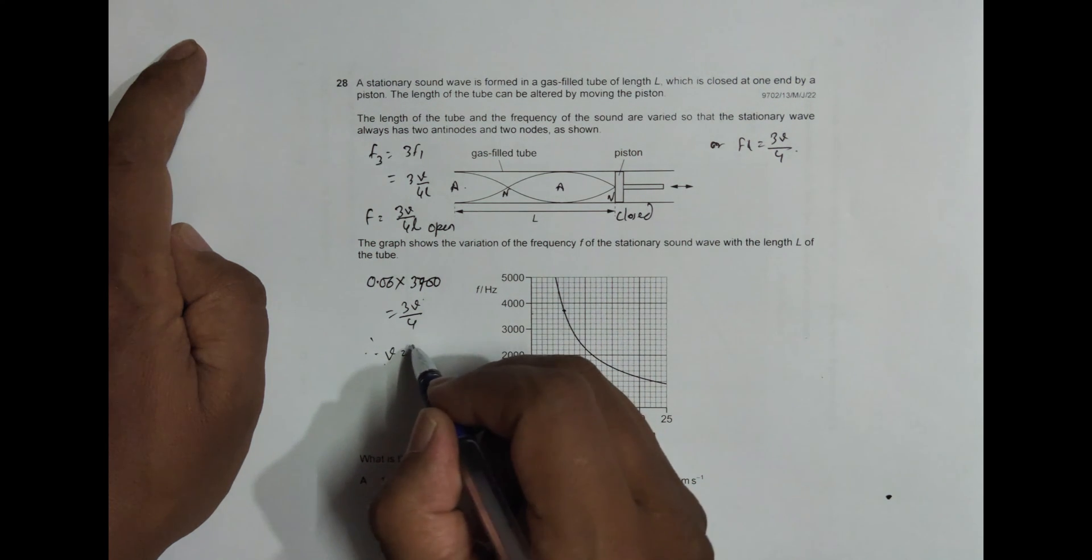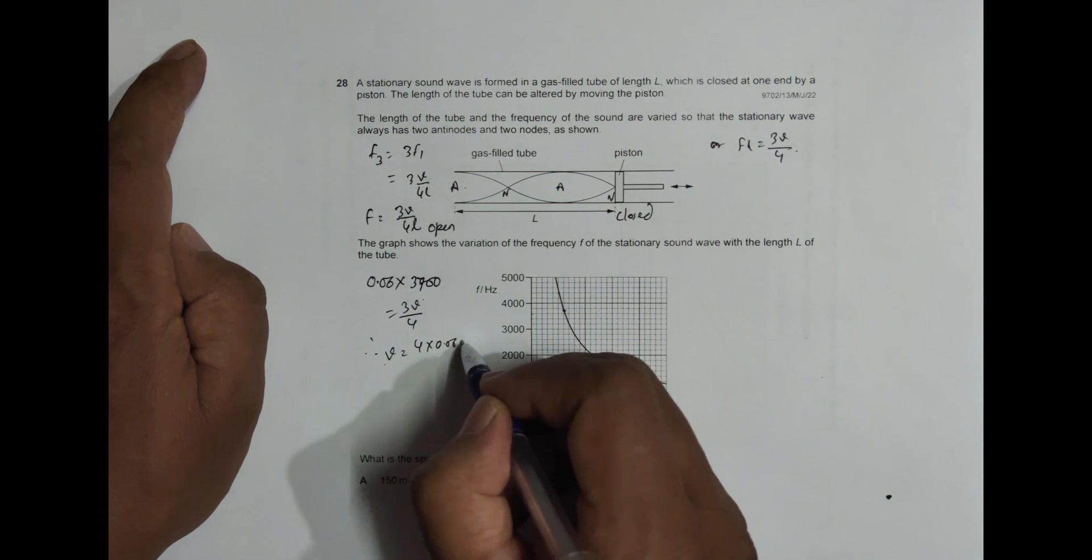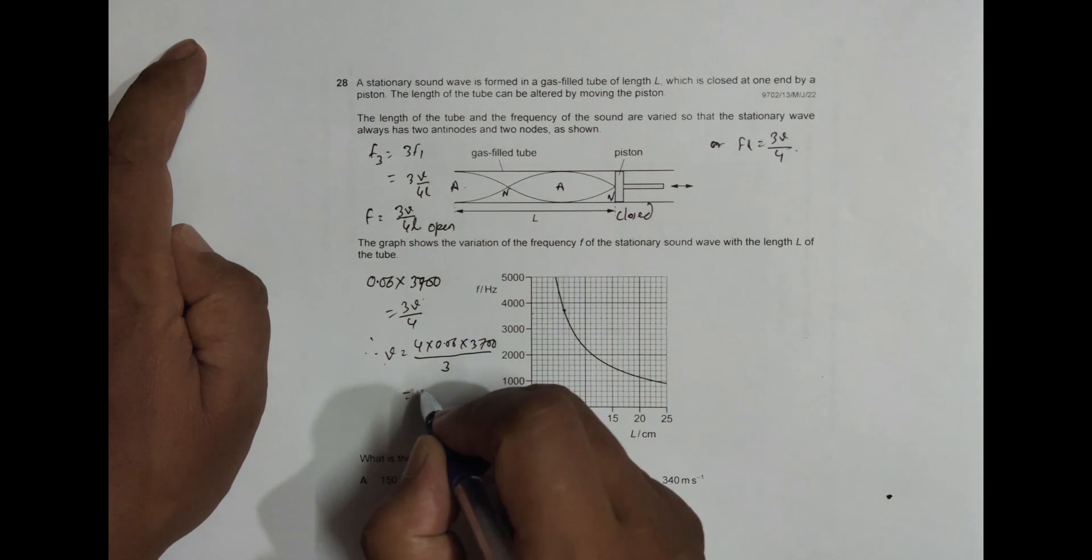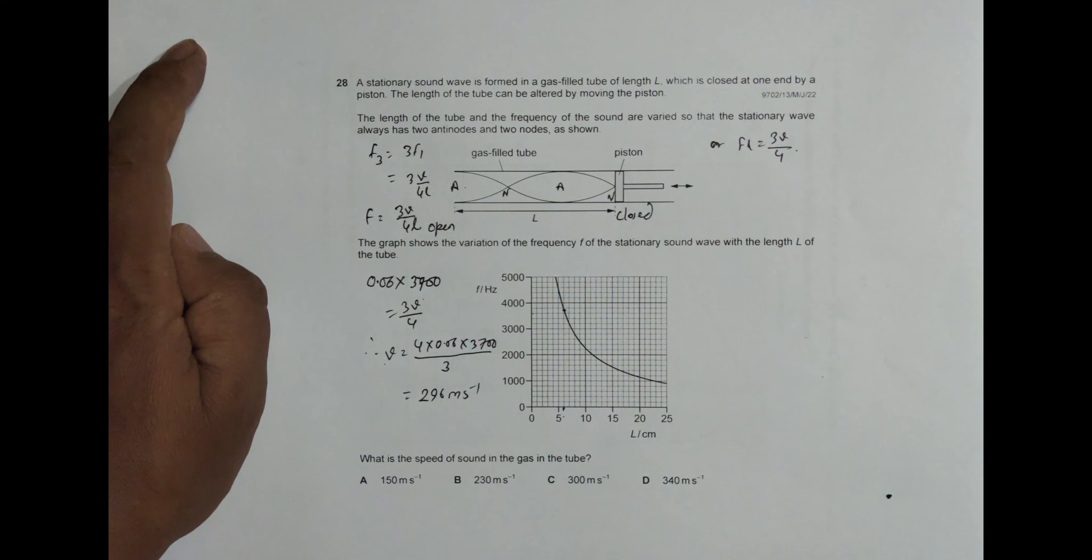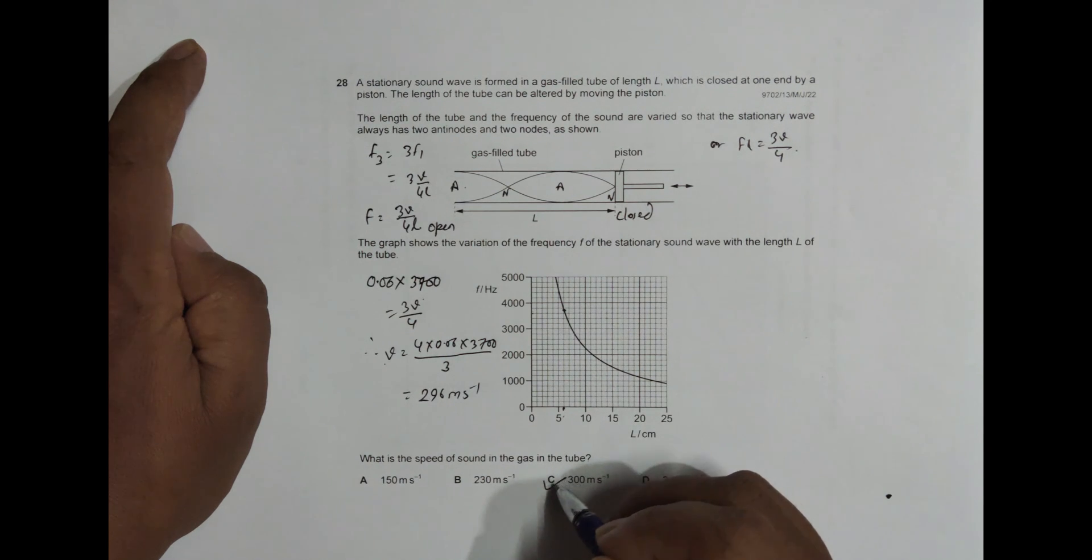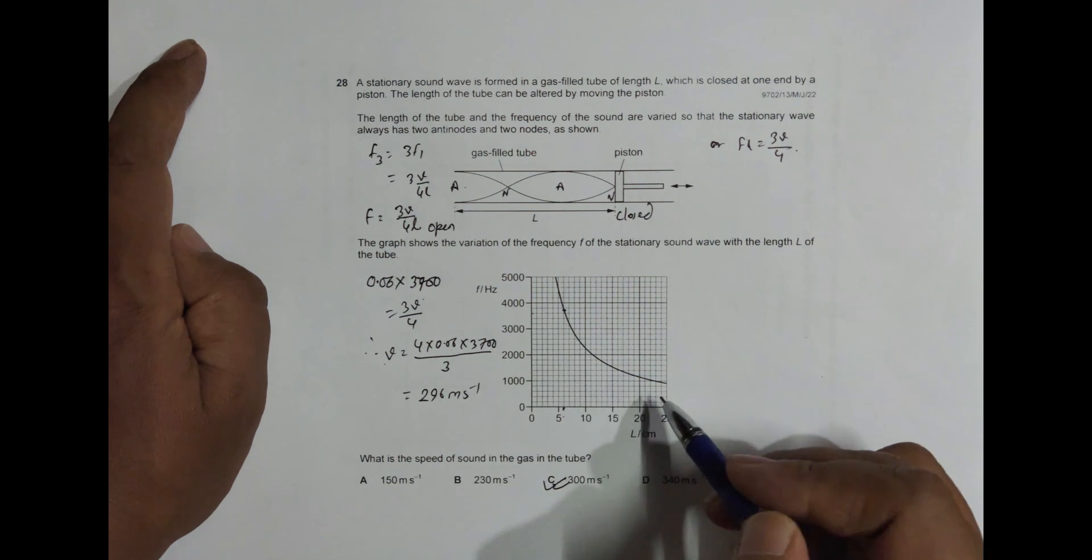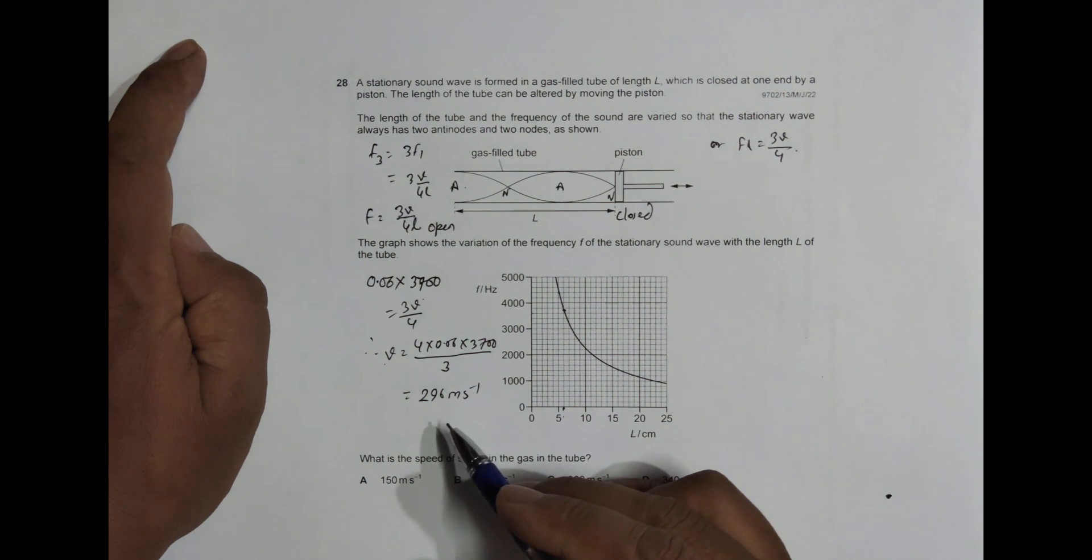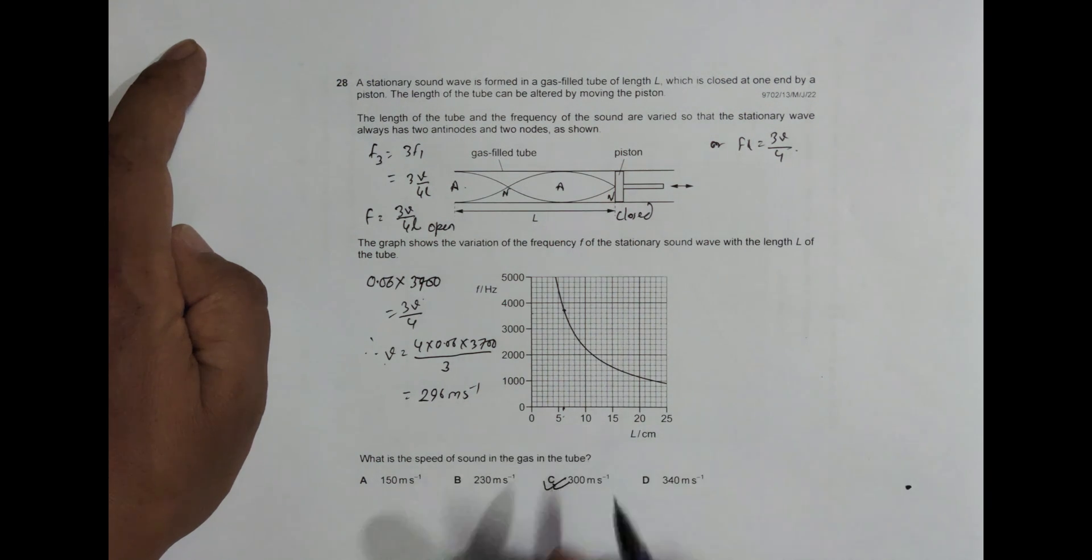Therefore, V should be equal to 4 into 0.06 into 3700 by 3. So when I do this in the calculator, 4 into 0.06 into 3700 divided by 3 equals 296 meter per second. This is more approximately 300 meter per second. The main error is in the reading of the graph points here. So the answer choice is number C.